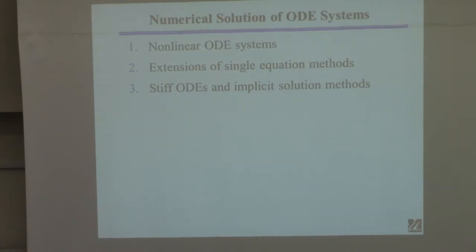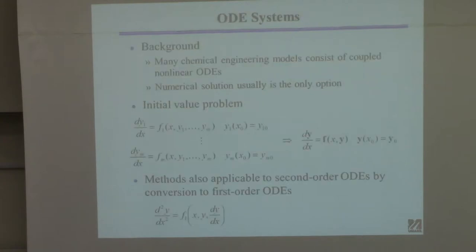The key thing is really the idea of stiffness, which only occurs if you have more than one differential equation. I want to explain that and give you some motivation for why you'd want to use implicit methods — because so far they might seem like a waste of time, but if the problem is stiff, you'll see they're quite important.